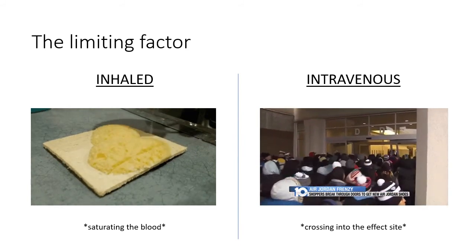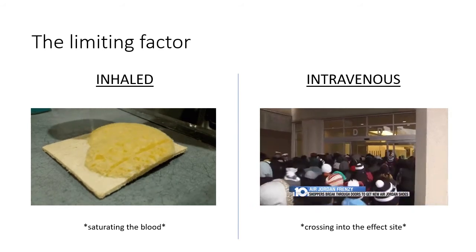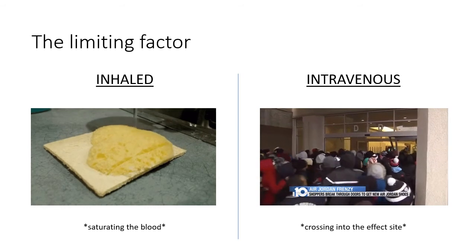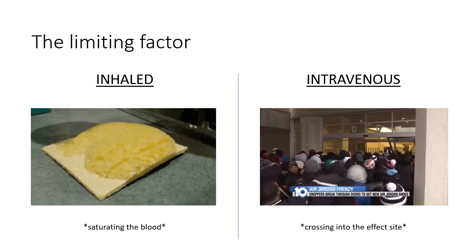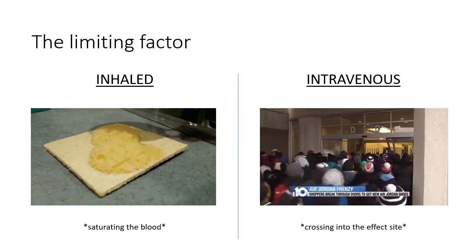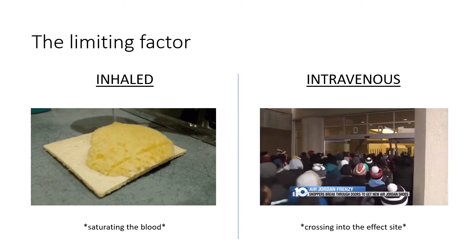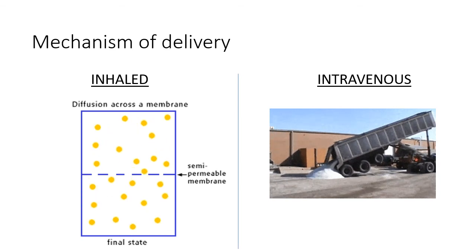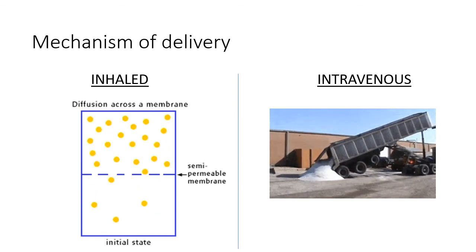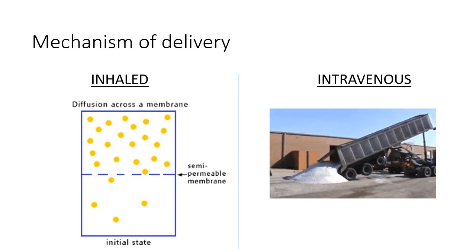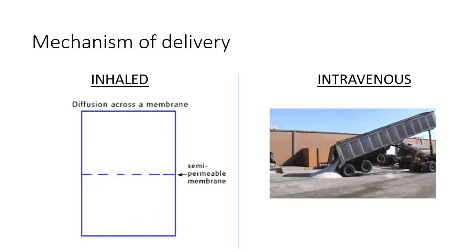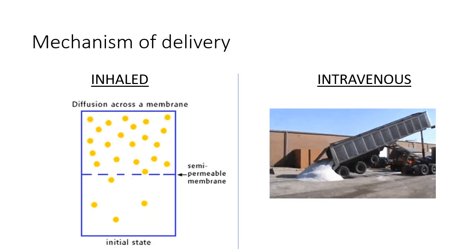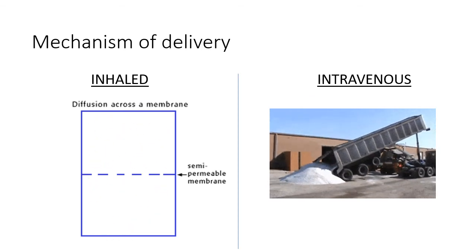I would say that the reason is that the onset of effect is subject to different limiting factors. For inhalational anaesthetics, the limiting factor is the rate at which the partial pressure in the blood can rise. It's a saturation phenomenon. For intravenous drugs, the major limiting factor is the rate at which the drug can pass from the plasma into the effect site. The reason for this disparity is that the mechanisms of delivery are fundamentally different. Whereas sevoflurane must diffuse across a membrane, we can dump propofol into the circulation as quickly as we like.